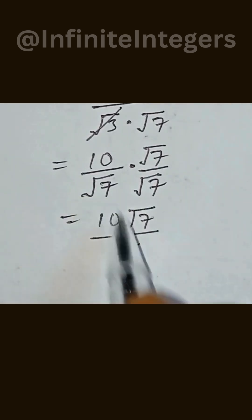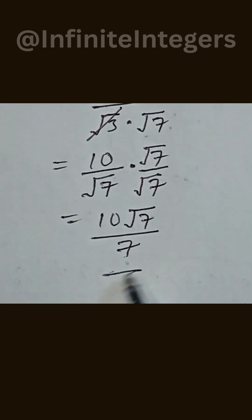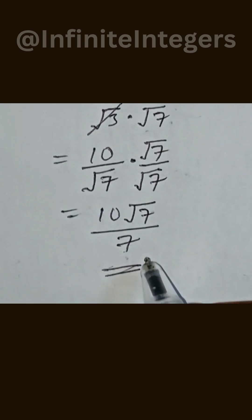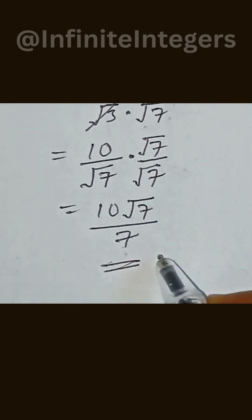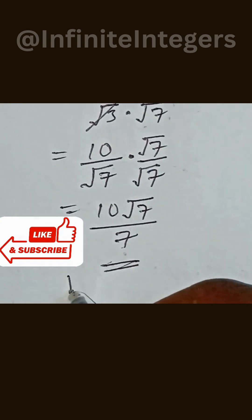This multiplied by this will be equal to 10 square root of 7 over 7, since square root of 7 times square root of 7 becomes 7. And that's the final simplification. Thanks for watching — like, share, and subscribe.